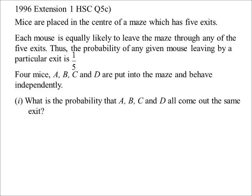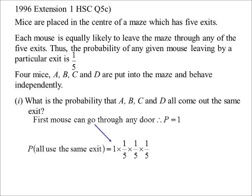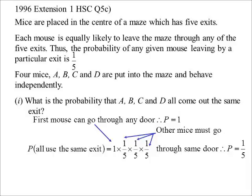What's the probability they all go out the same exit? Using the basic counting idea with probabilities: the first mouse can go out any door, so probability one. The other mice have got to go through the same door — chance the second mouse goes through that door is one in five, third mouse one in five, fourth mouse one in five. So we get one in 125.